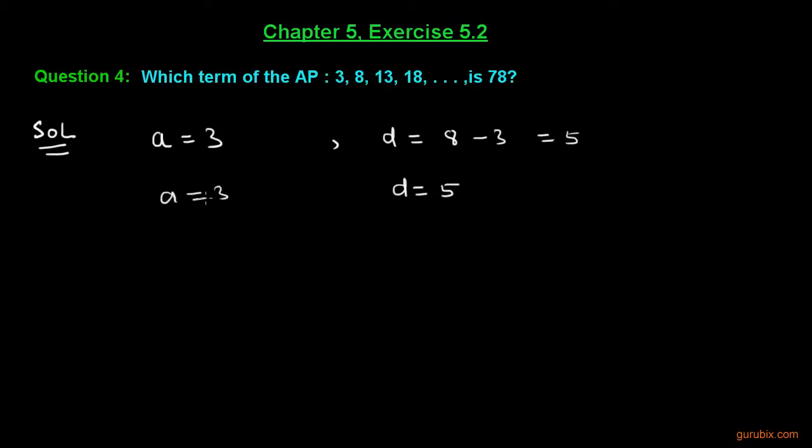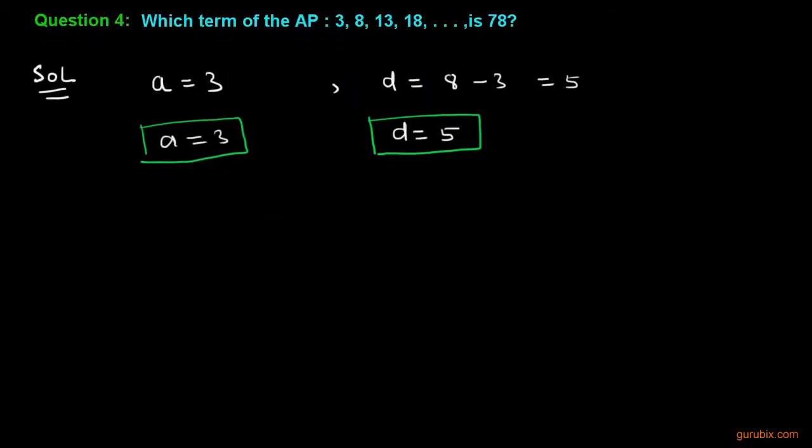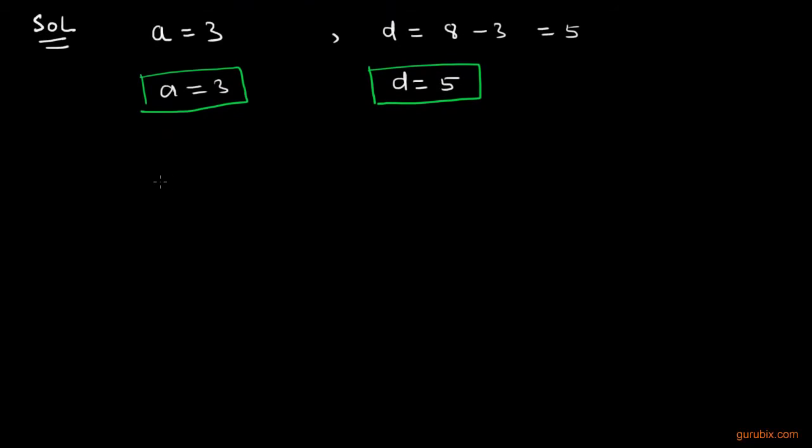A equals 3 and D is 5. We are given the Nth term, which means AN is 78. Now we have to find N.